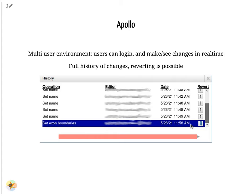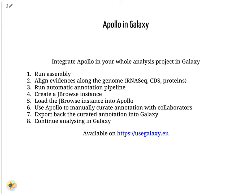Apollo keeps track of every action performed on each gene in a history, and you can revert any change at any time. Apollo is now tightly integrated with Galaxy, which allows integrating the manual curation process into a complete Galaxy-based analysis workflow.